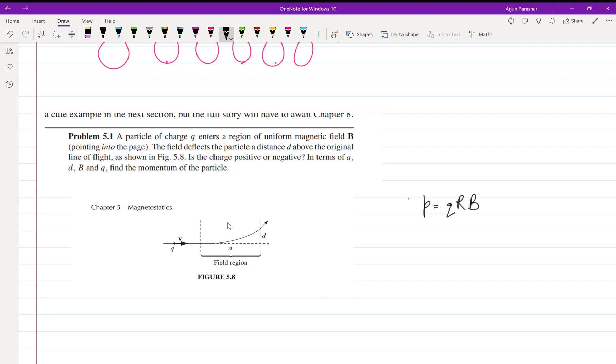Point your thumb in the direction of force, point your index finger in the direction of magnetic field that is into the page, and then point your middle finger in the direction of velocity.